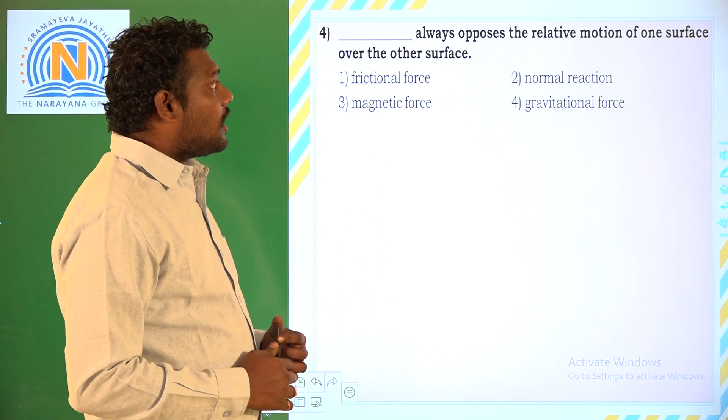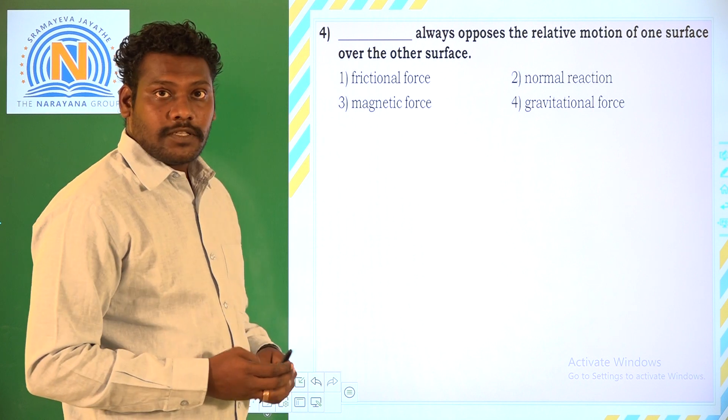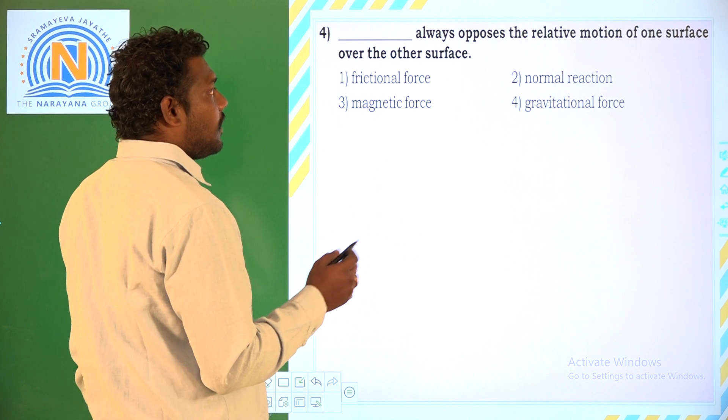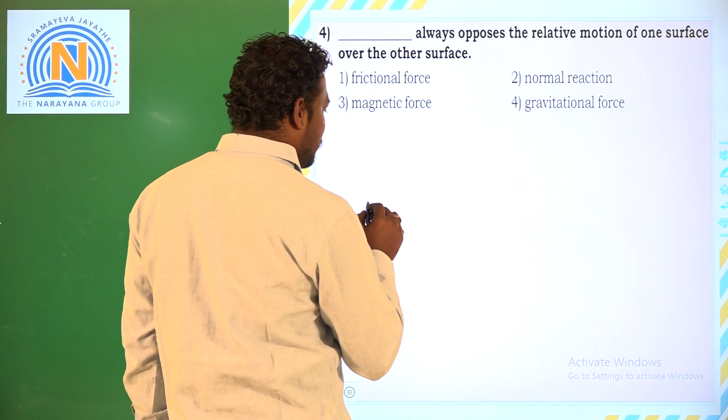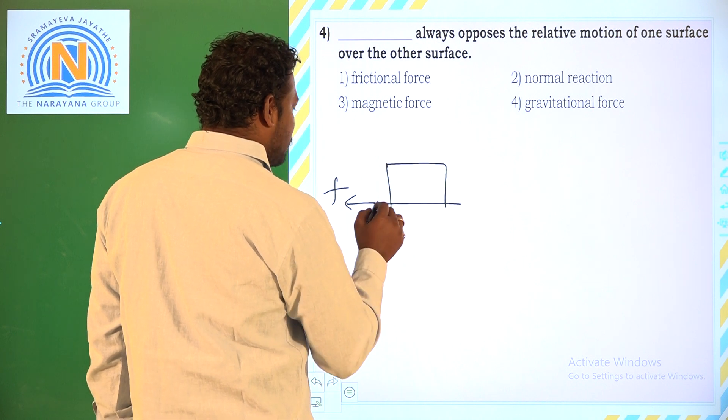What always opposes relative motion of one surface over the other surface? So, the force which opposes relative motion between one surface and other surface is, just now we have seen this force, frictional force.